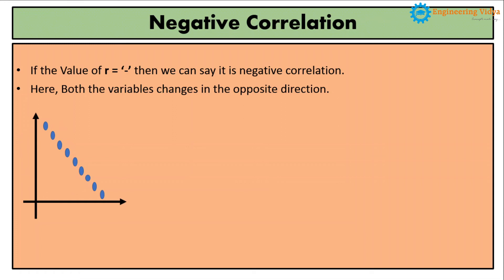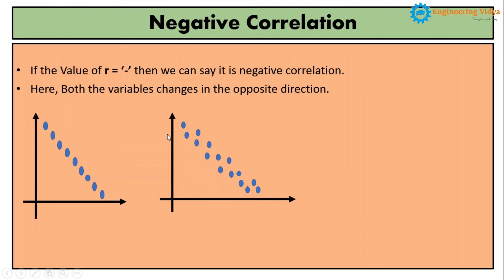Now I will see the second example of negative correlation. In this case also, as soon as I increase the value of x the value of y decreases. But this may not happen with every sample — some exceptional samples may be there. Comparing the first and second negative correlation graphs: in the first case, for 100% of samples, if I increase x the value of y decreases. But in the second case some exceptional samples exist. That is why the second graph has a lower degree of negative correlation compared to the first.